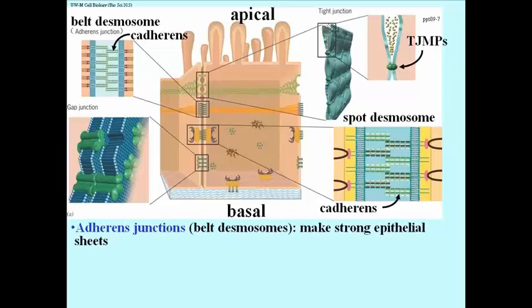On the left, the third kind of junction is a gap junction. These are actually channels which are very small but hydrophilic, and so they will allow ions to flow between cells.